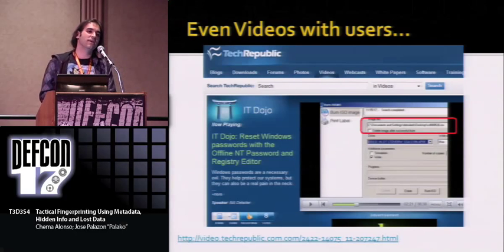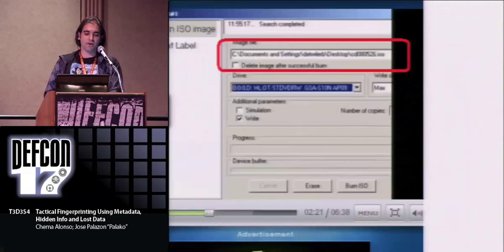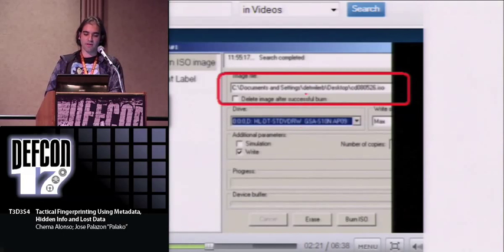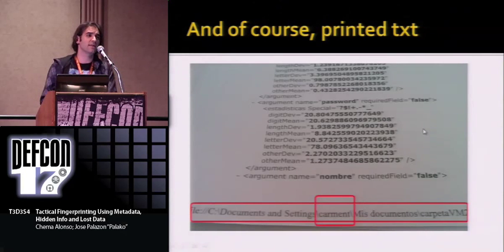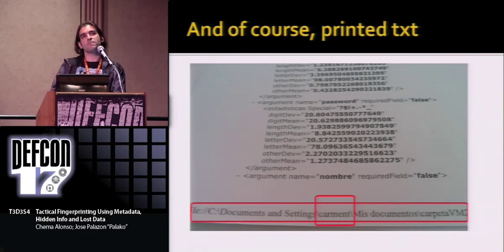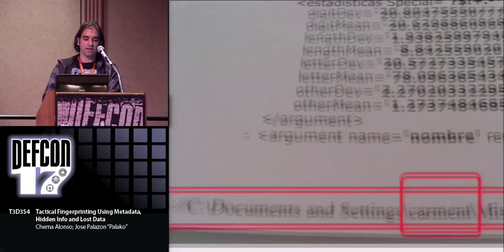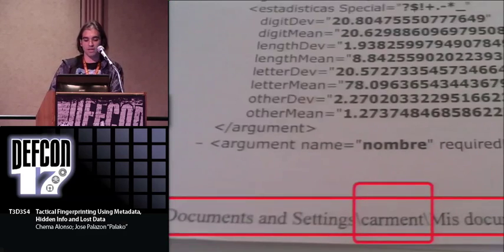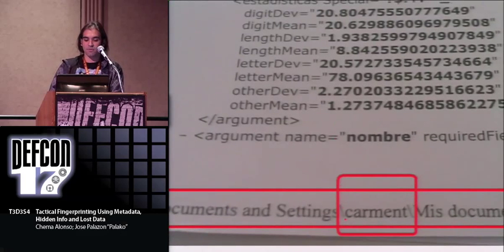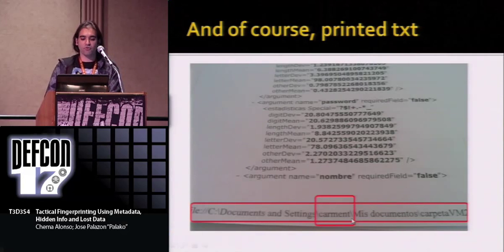You can find metadata also in videos — for example, it's possible to discover the username of the speaker. Or in a printed TXT file: almost everything printed from Notepad prints in the footer the path from which the document was printed. In one real example involving a girl, her username was visible in the footer. So you can find metadata around you everywhere.